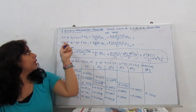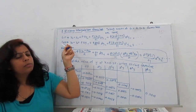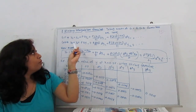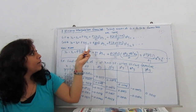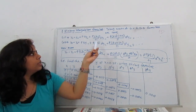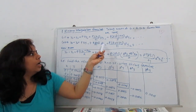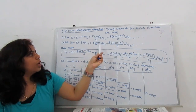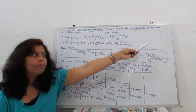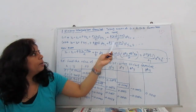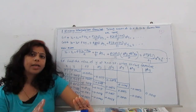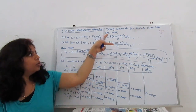Similarly, in the Gauss backward formula, the same process applies but y0 appears only once: y0 + p·Δy₋₁ + p(p+1)/2·Δ²y₋₁ — note the difference: it is p(p+1) rather than p(p-1) — then Δ³y₋₂, Δ⁴y₋₂ with p(p+1)(p-1)/3!, and so on.